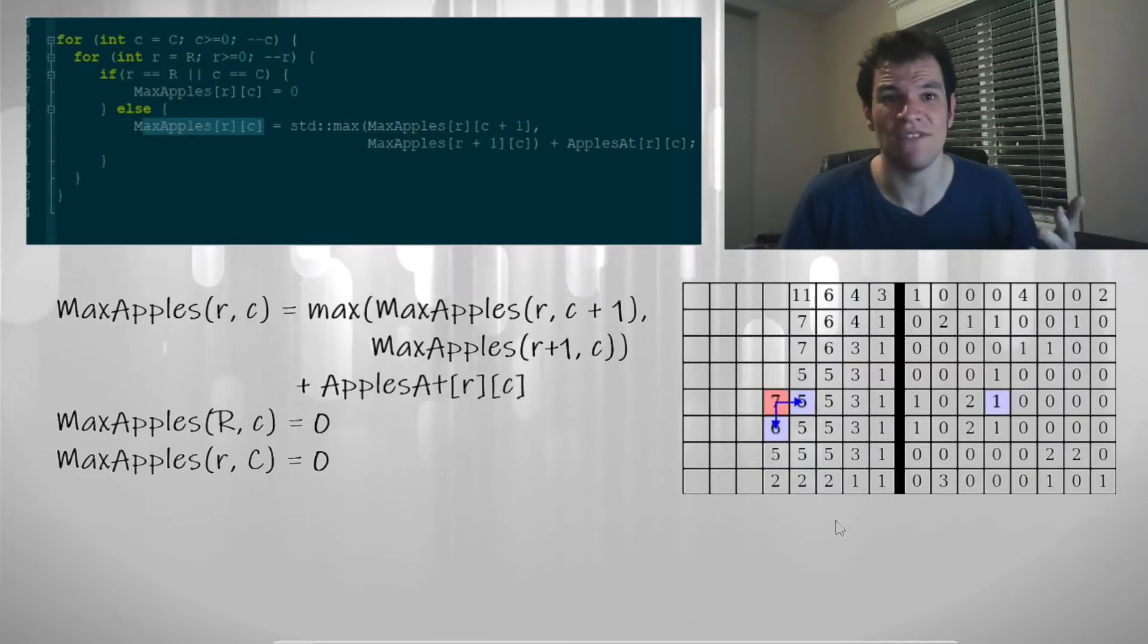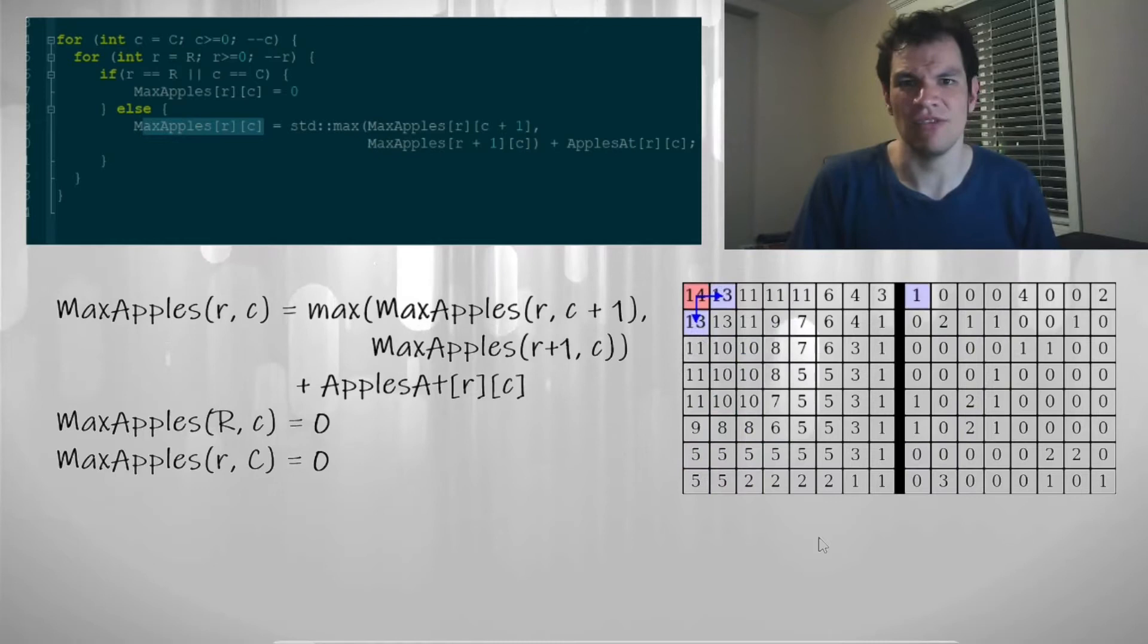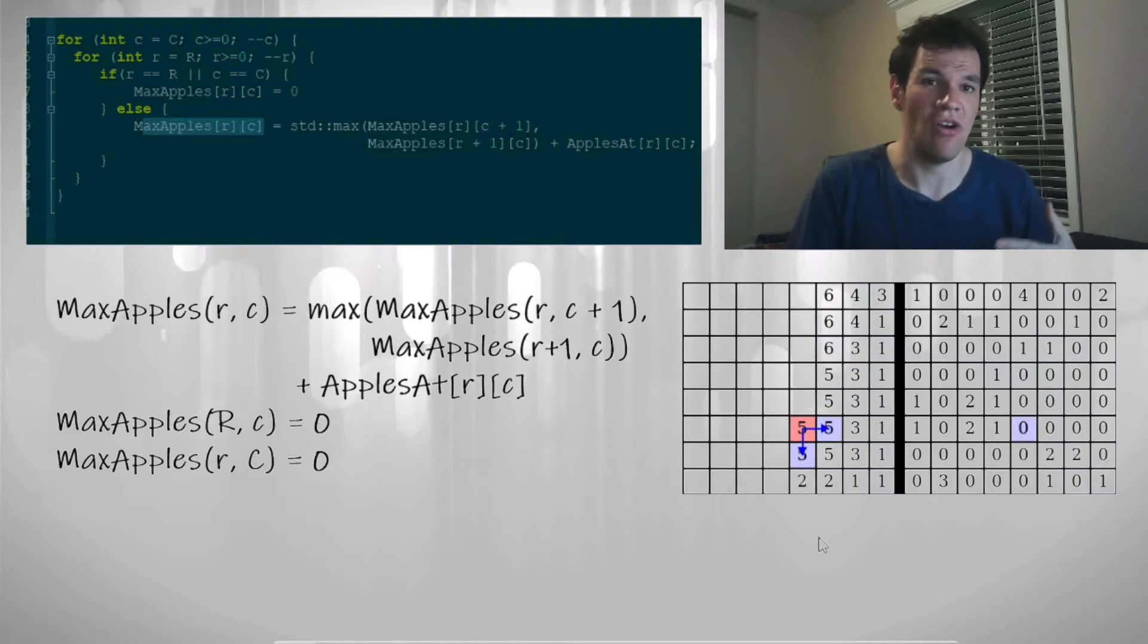What is important is just that when one cell is being computed, the cells that it reads were already computed. So, there are many possible valid orders to build a table.